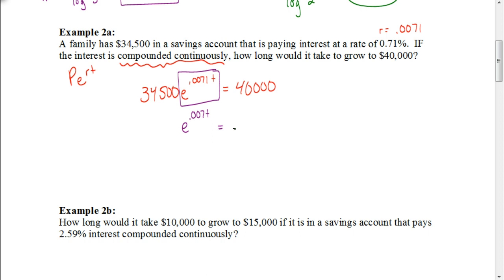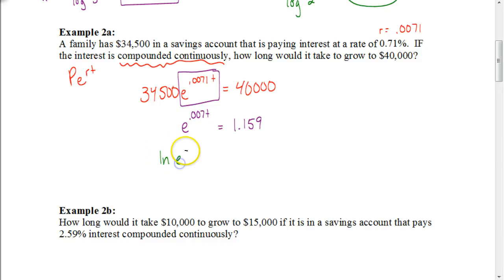When I take 40,000 divided by 34,500, we get approximately 1.159. Just like in the previous examples, there are two ways to solve this. The first way would be to take the natural log of both sides. Since our base is E, I want to take the natural log of both sides. So I'm going to take the natural log of E to the 0.0071T, which equals the natural log of 1.159.